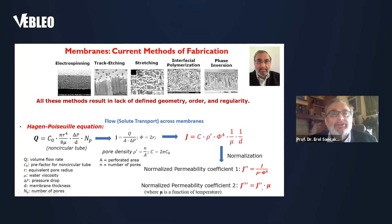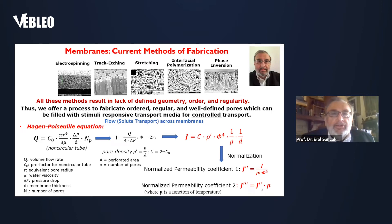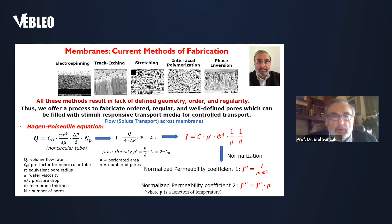For the membranes currently used, these unfortunately lack defined geometry, order, and regularity. They involve electro-spinning, track etching, film stretching, interfacial polymerization, and phase inversion. Our method, however, produces ordered, regular, and well-defined pores. Therefore, we can create stimuli-responsive transport media for controlled transport. The advantage of this is that we can use well-established physical laws and models to design our membranes and then tune them for a specific application.